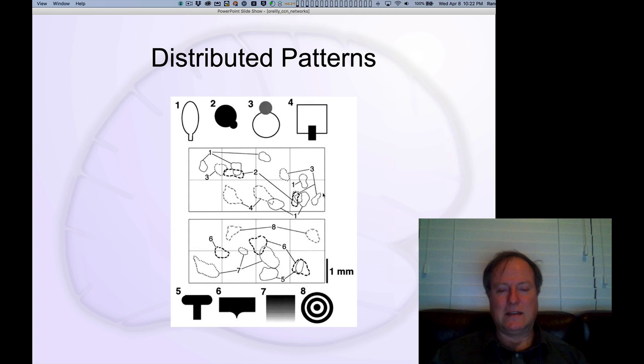This data shows us how we have these distributed representations. There was a different neuron that actually responded to the other direction of the nose. What we're looking at is a map of the cortical surface of the monkey in the monkey brain, in this infratemporal cortex area.